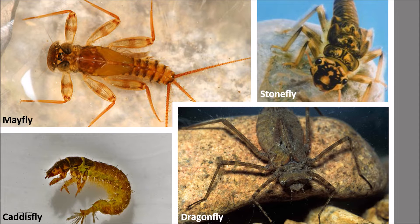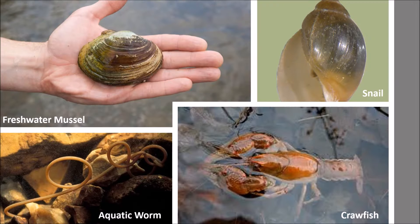Examples of aquatic macroinvertebrates include insects in their larval or nymph form such as the mayfly, stonefly, caddisfly, and dragonfly. Other macroinvertebrates include crawfish, freshwater mussels, snails, and aquatic worms.